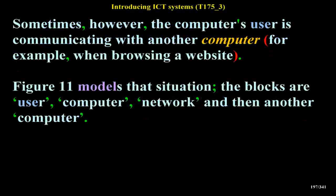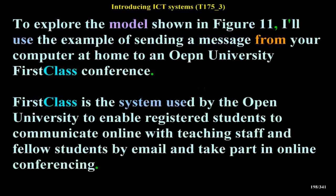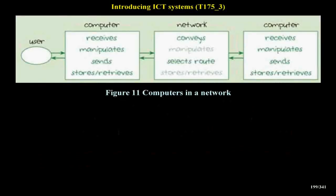The blocks in Figure 11 are: user, computer, network, and then another computer. To explore this model, I'll use the example of sending a message from your computer at home to an Open University First Class Conference. First Class is the system used by the Open University to enable registered students to communicate online with teaching staff and fellow students by email and take part in online conferencing.